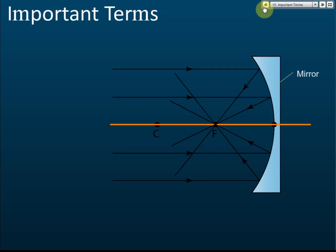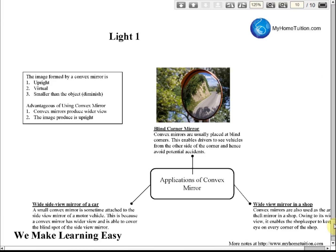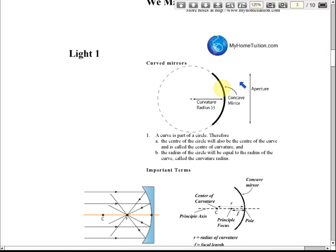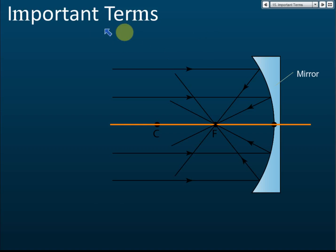There is one more term: the aperture. The width of the curve is called the aperture. You measure the straight-line distance from one end of the curve to the other — that is called the aperture.